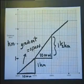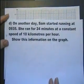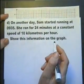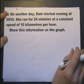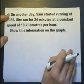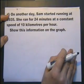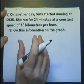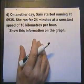We still haven't finished this question because we're now at part D. On another day, Sam started running at 9:35. She ran for 24 minutes at a constant speed of 10 kilometers per hour. Show this information on the graph.